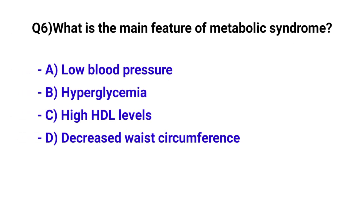Question number 6. What is the main feature of metabolic syndrome? The correct option is B. Hyperglycemia.